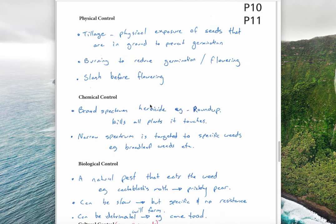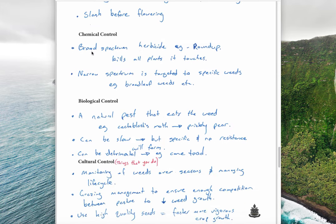Some further examples: physical control includes tillage or ploughing, which exposes seeds and generally prevents germination; burning to reduce germination; and slashing to prevent flowering. Chemical control includes a broad-spectrum herbicide, which kills all plants — both monocots and dicots — such as Roundup, or a narrow-spectrum targeted herbicide, which kills only broadleaf weeds and not your wheat crop. A broadleaf weed killer is an example of a chemical that kills only dicots and not monocots.